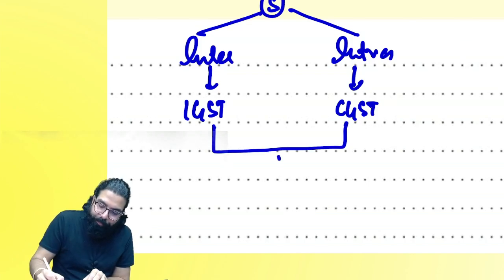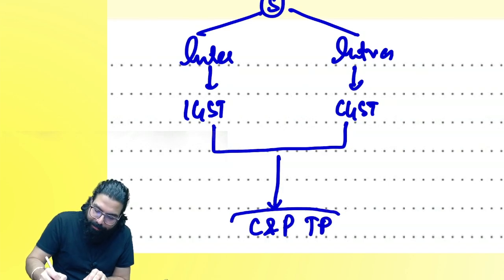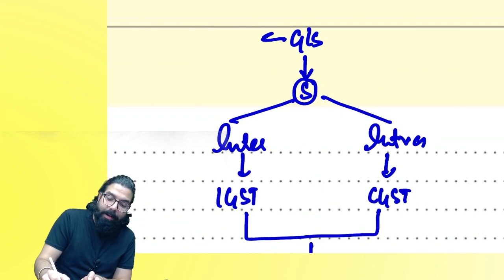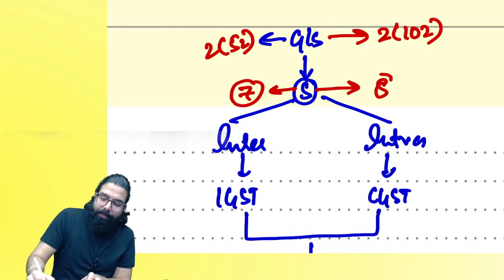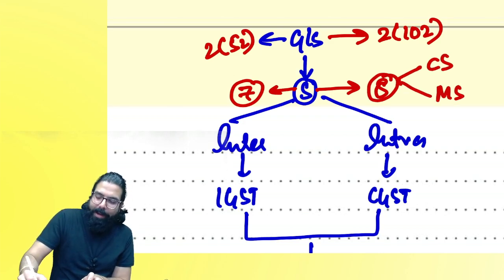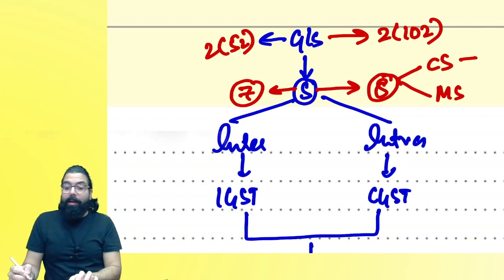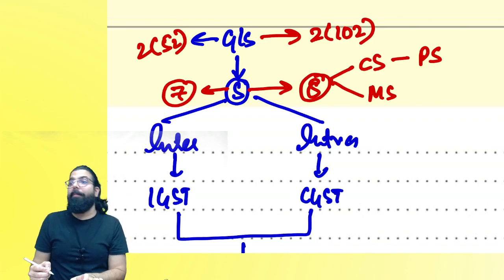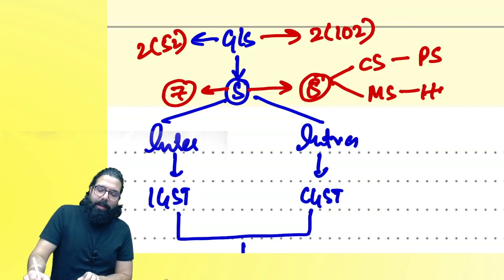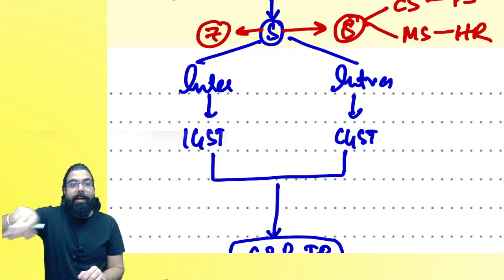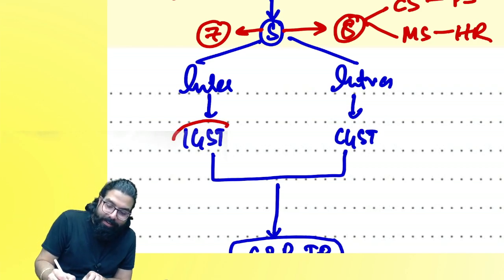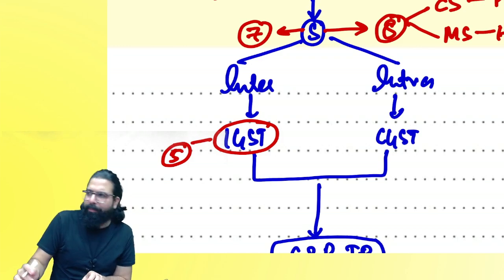Once GST is levied, it has to be collected and paid by a taxable person. Section 2(52) covers services, section 2(102) covers supply, section 7 covers supply, section 8 covers composite supply and mixed supply. Composite supply is based on principal supply. Interstate means a transaction between different states or UTs; intrastate means within the same state or UT. IGST levy is under section 5, not applicable here.